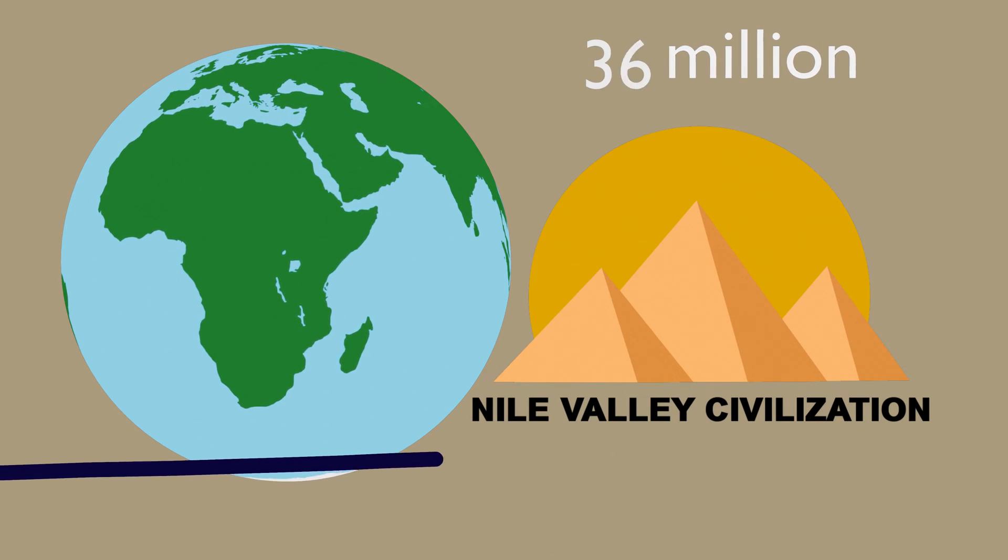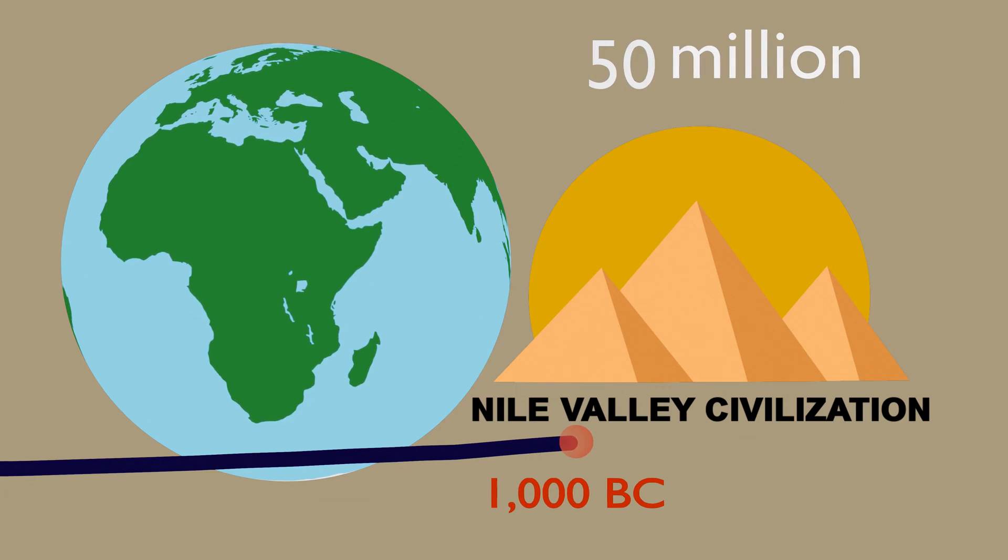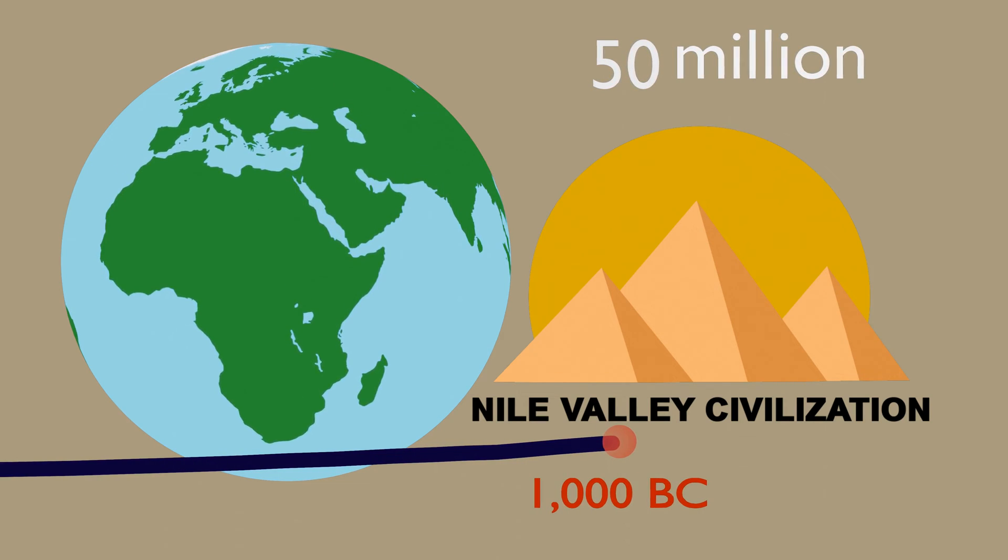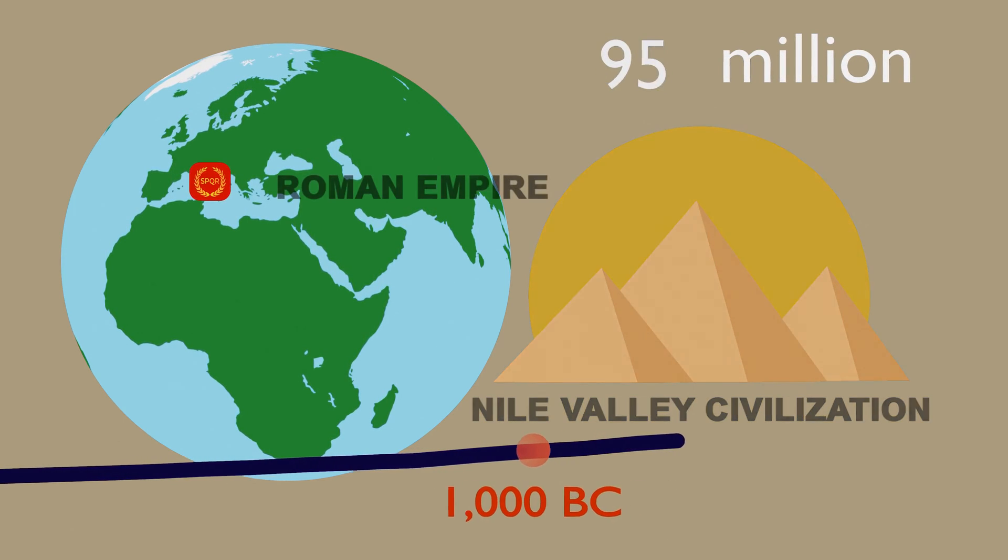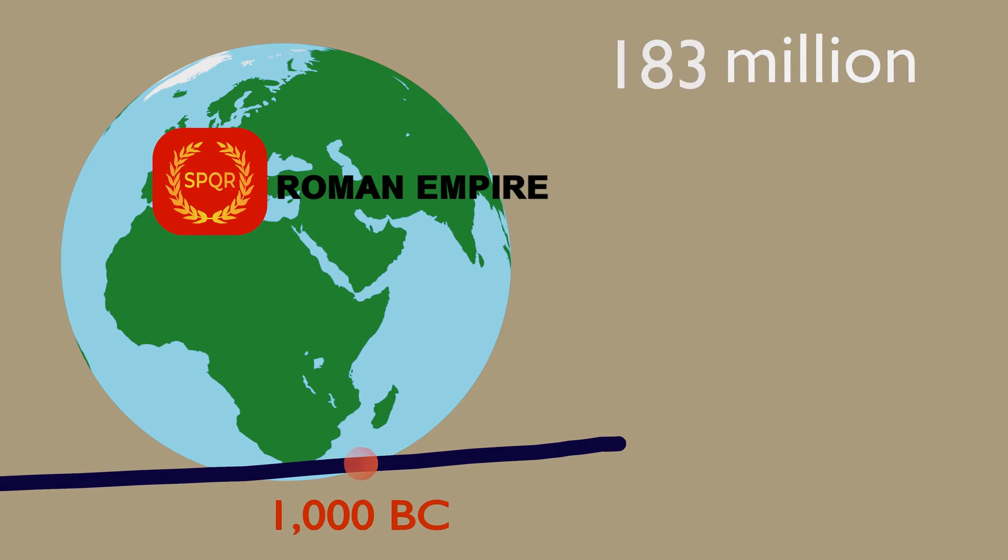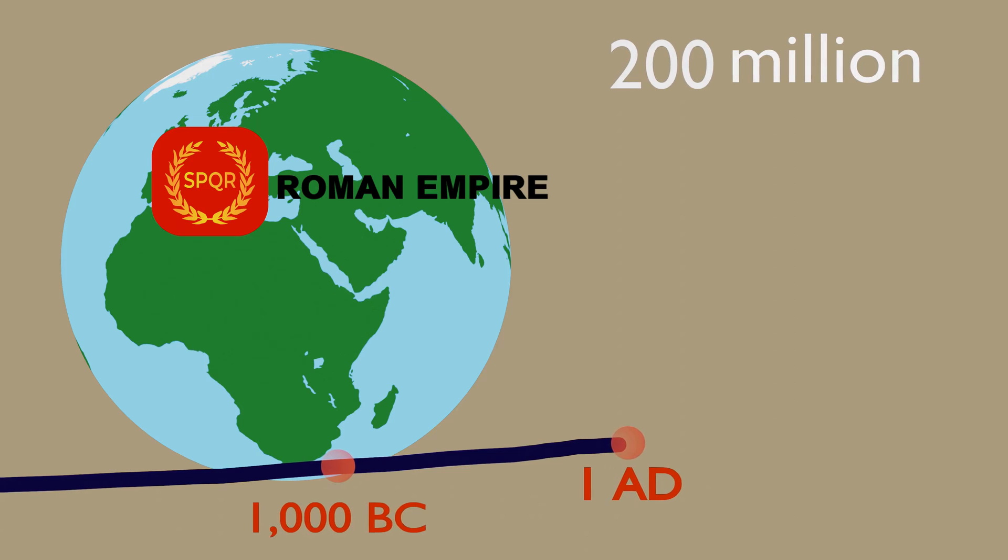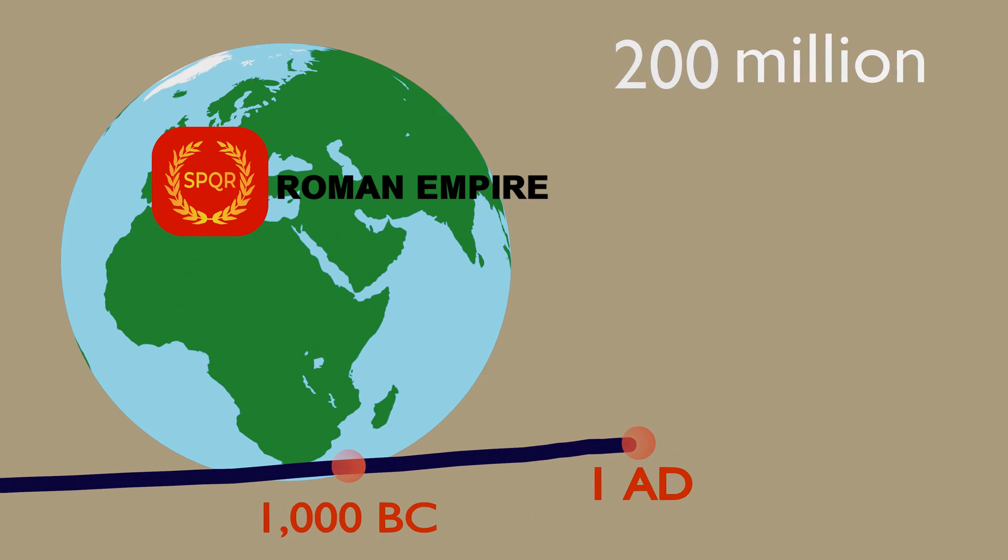In 1000 BC, population could only reach 50 million people. In 1 AD, world population was only 200 million people. At this time, many civilizations began.